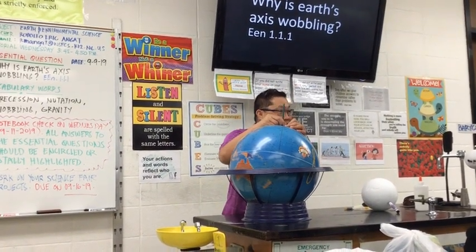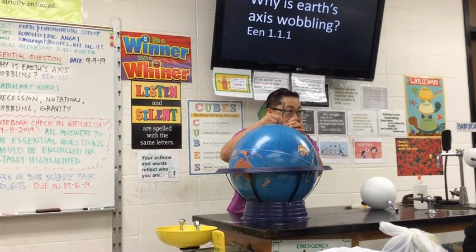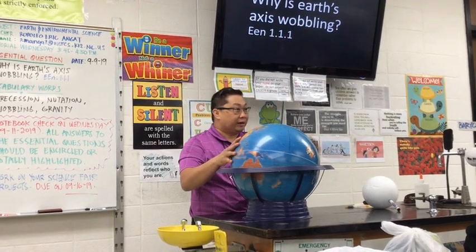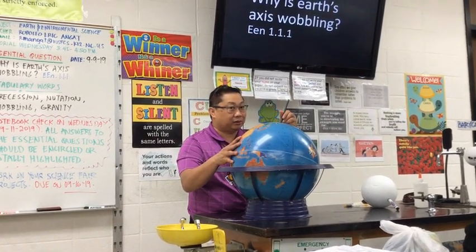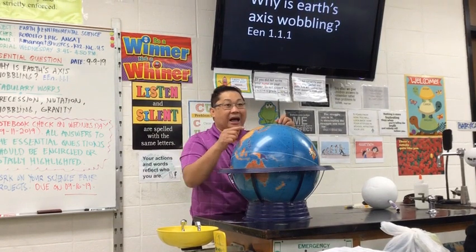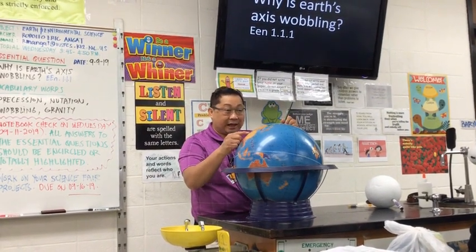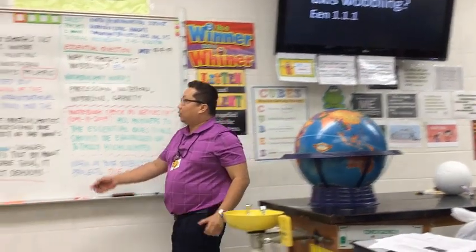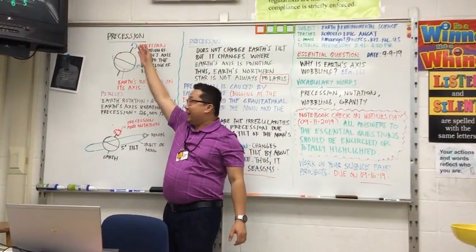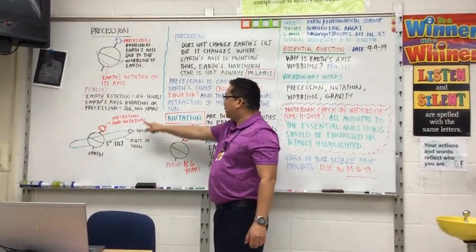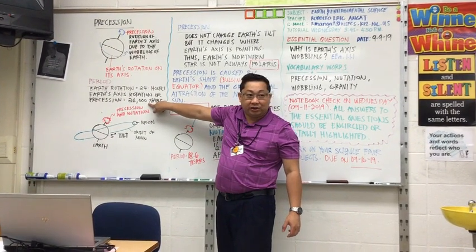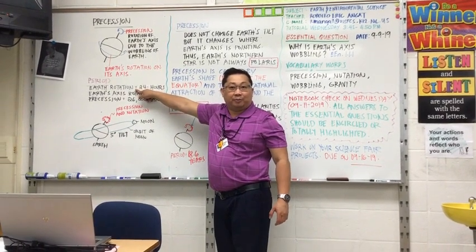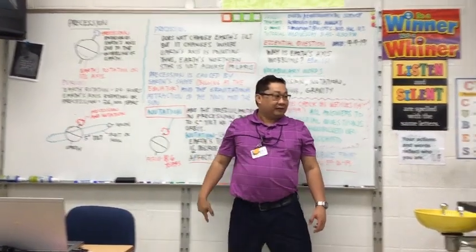This axis of Earth also rotates — it also rotates or spins. As the Earth rotates, Earth's axis rotates. This rotation of Earth's axis is what we call precession, and it is completed in 26,000 years, as opposed to Earth's rotation that is only completed in 24 hours.